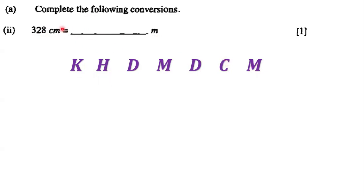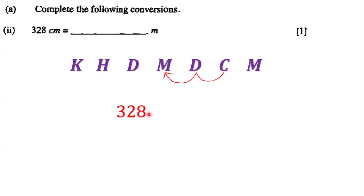Our goal is to convert centimeters to meters, so we move from C to M — that's two places. We move over twice to the left, giving us 3.28.